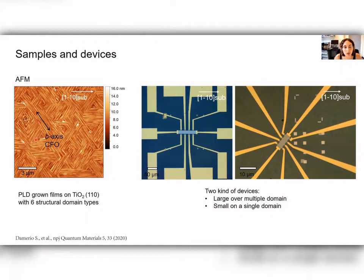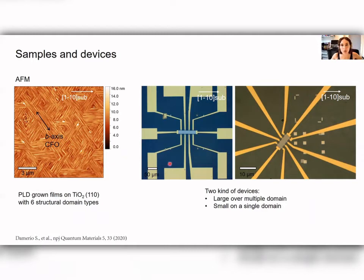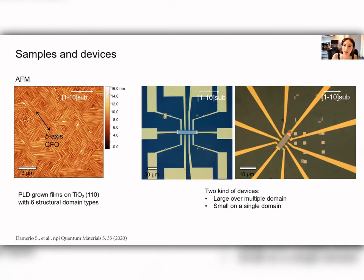We characterized these domains in detail by EBSD. What is important for this talk is that all domains consist of needle-like crystals, and the long axis of the needles corresponds to the magnetic easy axis of the material, so for all domains the magnetic easy axis is in the plane of the film. We built different Hall bar devices: larger ones about 100 micrometers covering many domains in random positions, and also single-domain devices localized to a single domain where the current direction is always parallel to the magnetic easy axis.